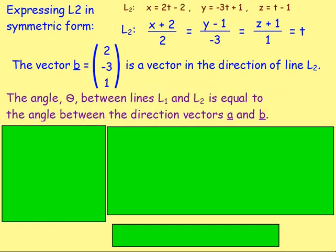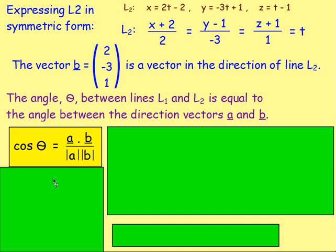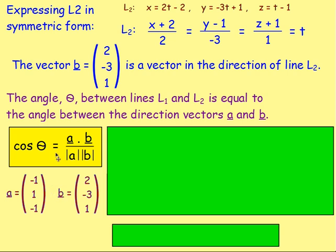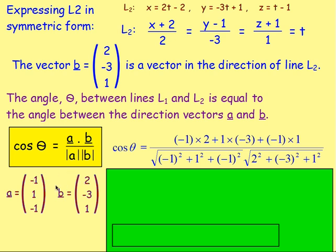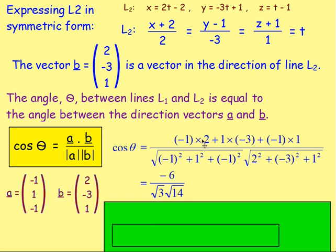The size of the angle between lines L1 and L2 equals the angle between direction vectors A and B. Using the formula cos θ = A·B / (|A| × |B|): A·B = (−1)(2) + (1)(−3) + (−1)(1). The magnitude of A = √((-1)² + 1² + (-1)²), and the magnitude of B = √(2² + (-3)² + 1²). Tidying that up gives cos θ = −6 / (√3 × √14).